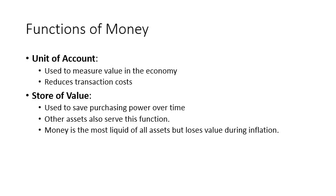The second function of money is unit of account. This is used to measure value in the economy and to reduce transaction costs. If we speak about accounting, we know there is a balance sheet. On the assets side, we can find land, buildings, cars, furniture, and so on. How can we gather all of these together? They are not the same thing. Instead, we transfer each asset to its value measured in money, and at the end we sum the different values for these assets on one side.